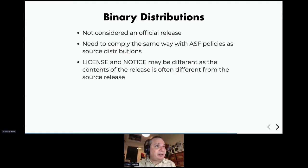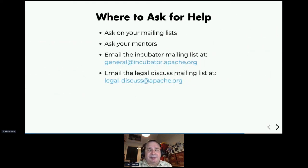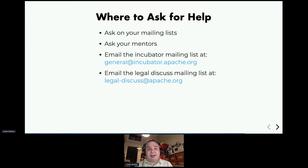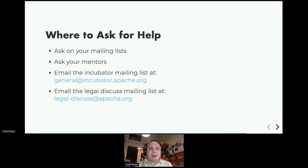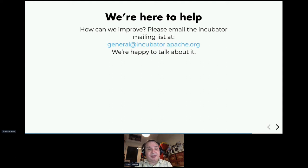This is complex and you're not always going to know it straight away as a new project. So ask for help: ask on your mailing list, ask your mentors, and if mentors aren't available, ask on the incubator mailing list. If it's a legal issue to do with licensing, ask on the legal-discuss list. Those are the four places to get help. We are here to help — if something is unclear, please come to the incubator general mailing list and ask questions. We're happy to help and update documentation to make things clearer.